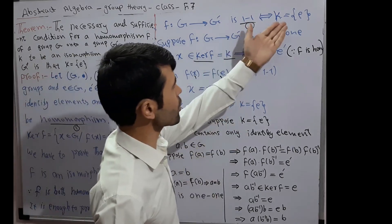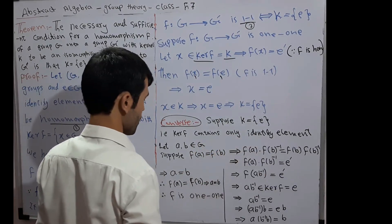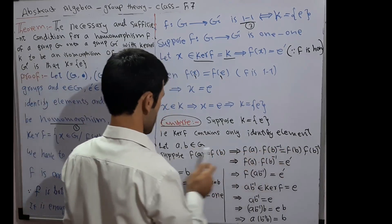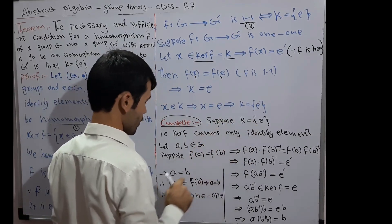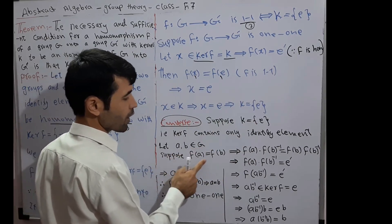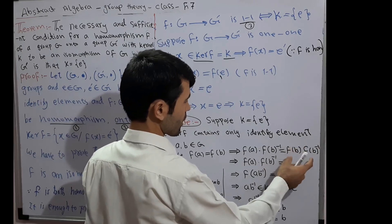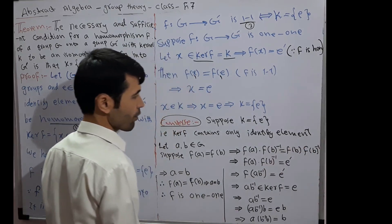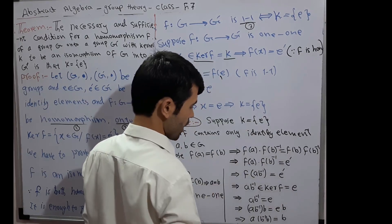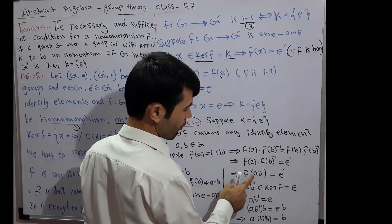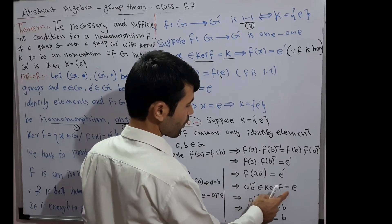Converse: we now suppose the right side and prove the left side. Suppose kernel F = {E}, meaning the kernel contains only the identity element. Let A, B belong to G. Suppose F(A) = F(B). We multiply both sides by F(B) inverse: F(A) · F(B)⁻¹ = F(B) · F(B)⁻¹ = E'. Since F is a homomorphism, F(A · B⁻¹) = E'. This implies A · B⁻¹ belongs to kernel F = {E}.